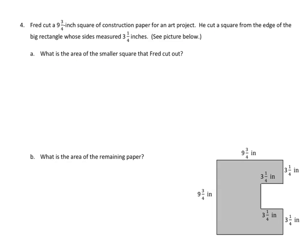We have a multi-step problem from the practice set, with a very similar problem in the homework. Fred cut a nine and three-fourths inch square of construction paper for an art project. Then he cut a smaller square from the edge of the big square whose sides measured three and one-fourth inches. The original square is nine and three-fourths by nine and three-fourths, and we're going to cut out a square three and one-fourth by three and one-fourth. The first step — what they ask in 4a — is to find the area of the smallest square.